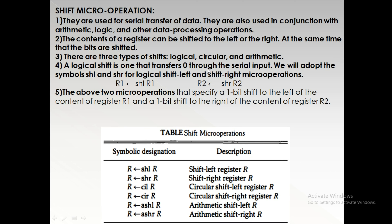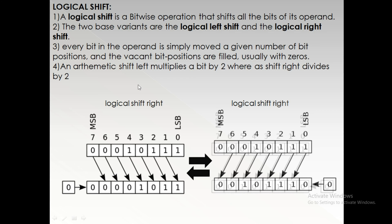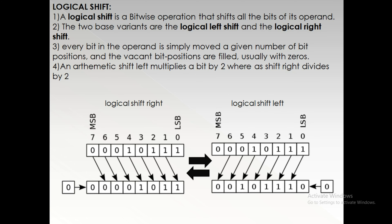Coming to the logical shift — a logical shift is a bitwise operation that shifts all the bits of its operand. Considering an 8-bit register, all 8 bits are shifted bitwise. There are two basic variants: logical shift left and logical shift right. Logical shift right transfers the 8 bits of data towards the right side, while logical shift left transfers the data towards the left.